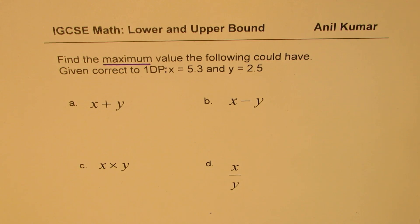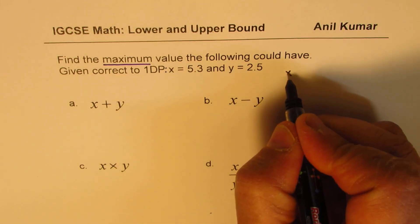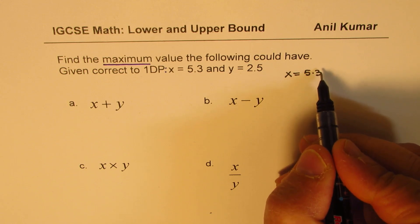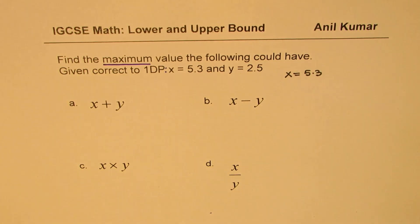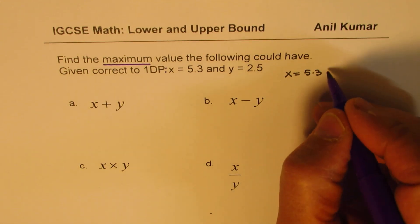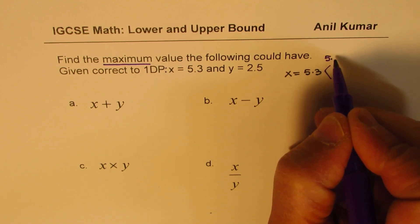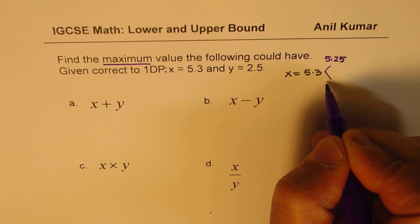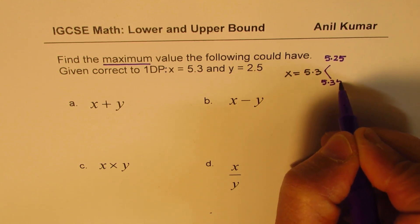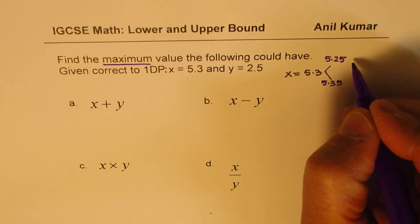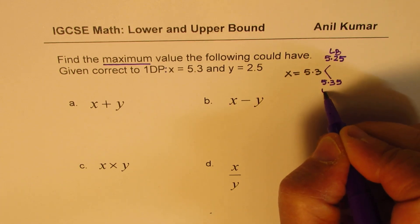This is a general question that should help you understand most of the concepts. Working with these values, we know X is equal to 5.3. It is rounded to one decimal place, meaning the precision is 0.05. So this number could have an upper and lower bound. The lower bound for 5.3 is 5.25, and the upper bound is 5.35. That is the variation which X could have — this is your lower bound and that is your upper bound.